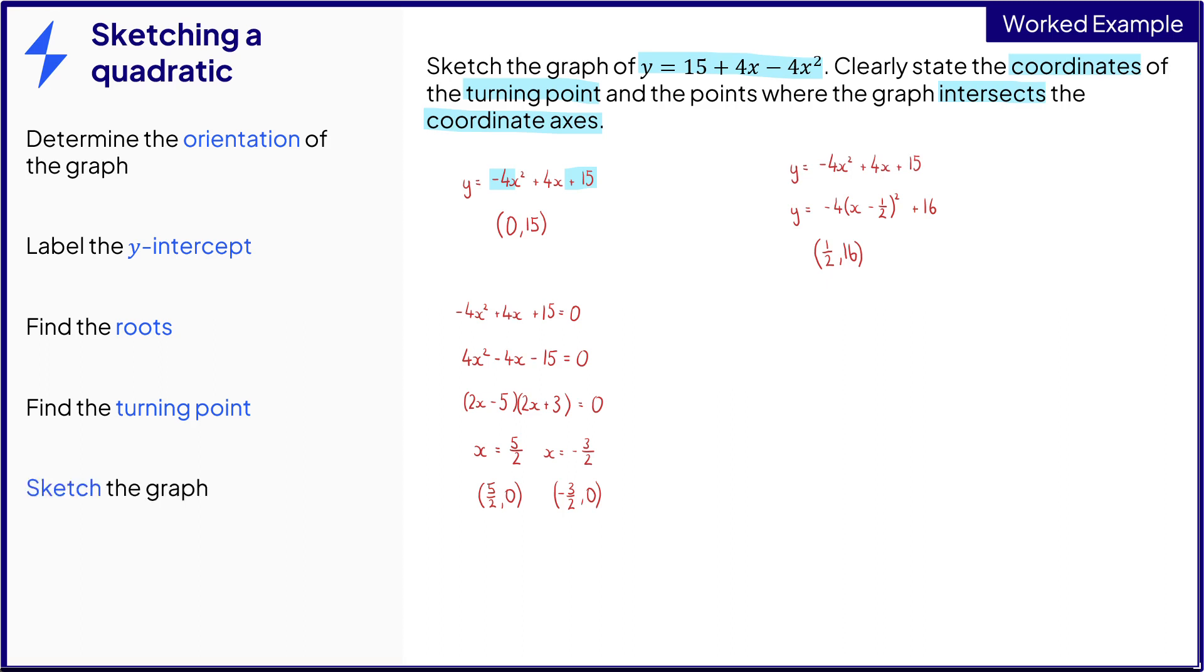Now all that's left to do is just sketch the graph. And the top tip is to sketch the graph before you actually label any points, to make sure you get the graph in the right position, and just label the numbers on the axes. So we know it's going to be upside-down, and the maximum is going to be on the right-hand side, because it's a half, 16. Just label the main points, so 15 on the y-axis. Label the maximum, one-half, 16. And label the x-intercepts, minus 3 over 2, and 5 over 2.